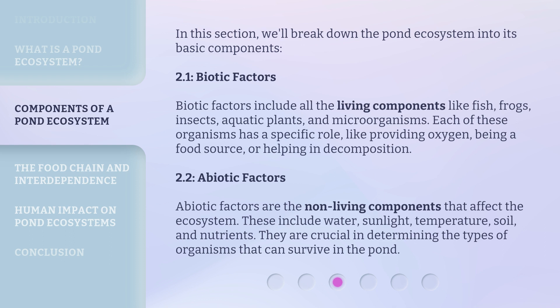Abiotic factors are the non-living components that affect the ecosystem. These include water, sunlight, temperature, soil, and nutrients. They are crucial in determining the types of organisms that can survive in the pond.